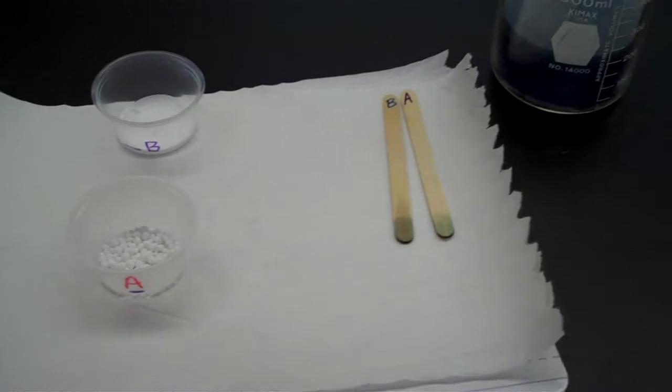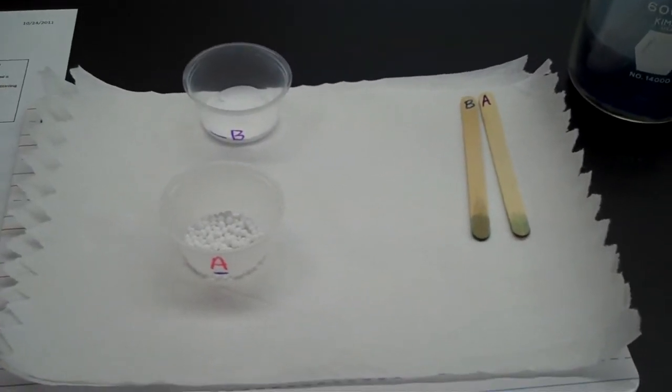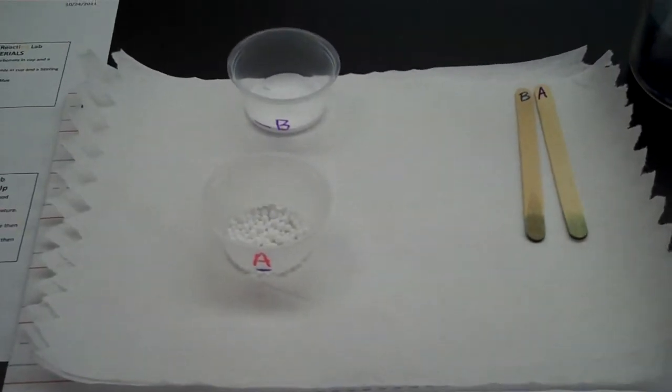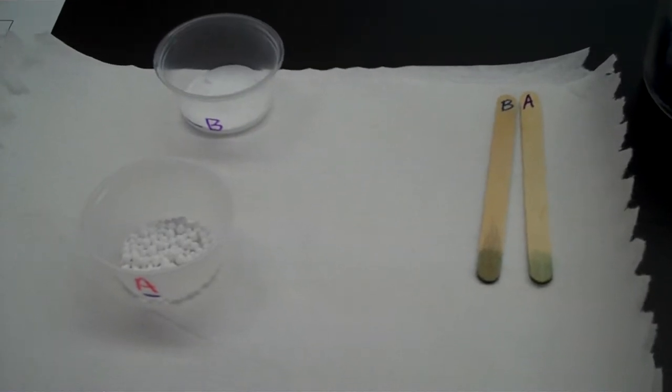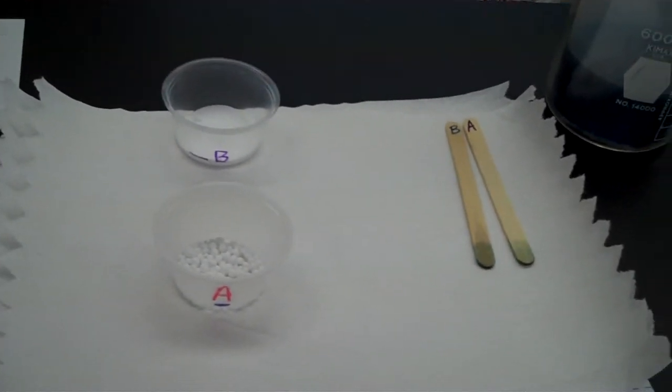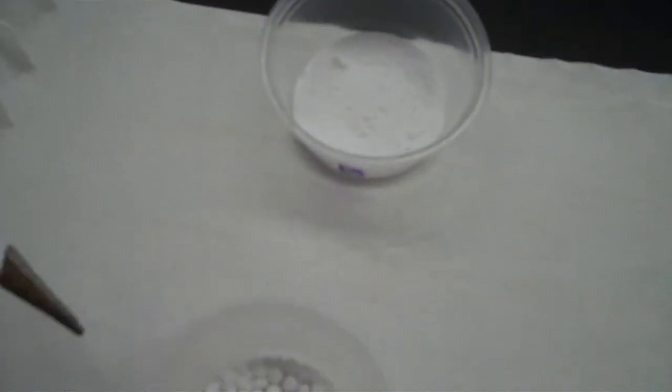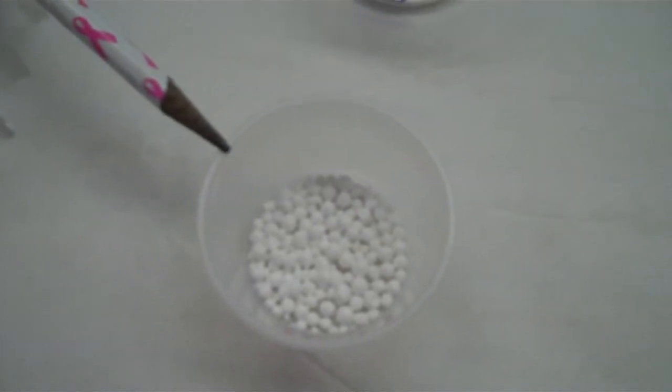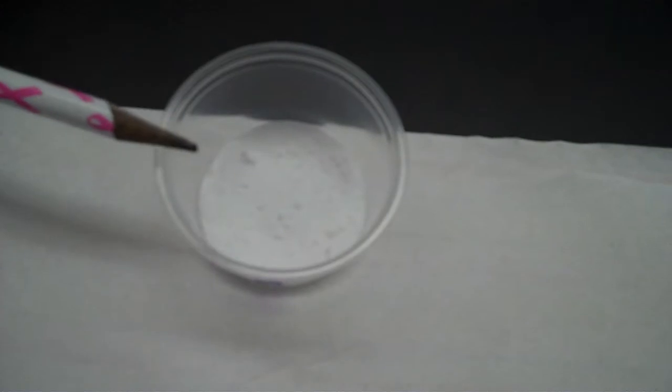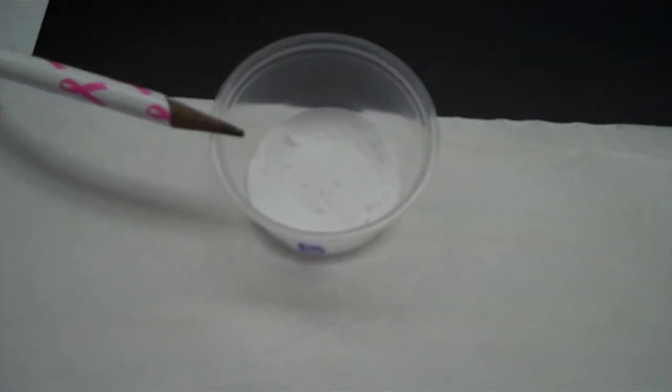And next, what we're going to do is we're going to take a look at these and look at the physical characteristics of both A and B. Physical characteristics. So look at those. And I'll give you an overhead view of A. Here's A. And here is B. Okay, so we've taken a physical look.